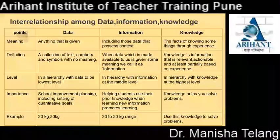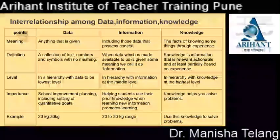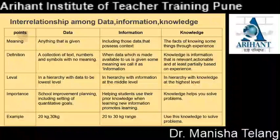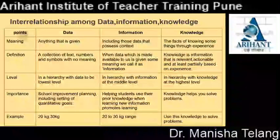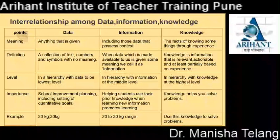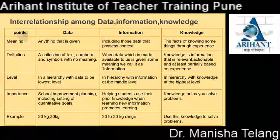Interrelationship among data, information and knowledge — points to be considered: meaning, definition, level, importance and example. Meaning of data: anything that is given. Meaning of information: including those data that possess context. Meaning of knowledge: the facts of knowing something through experience.